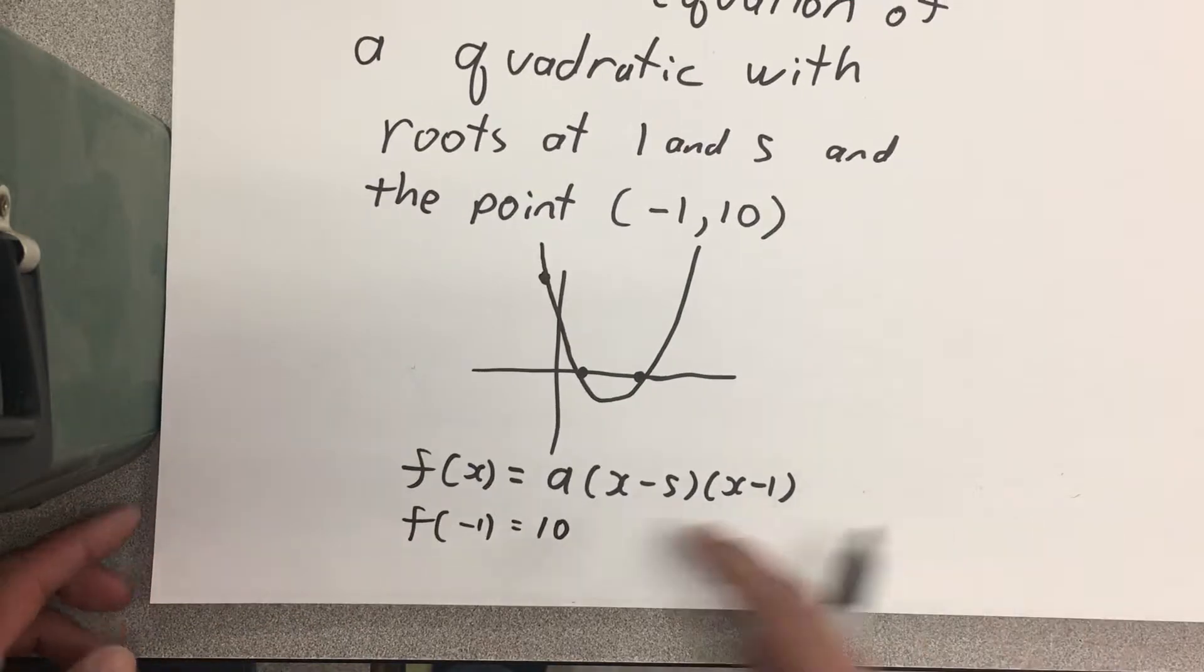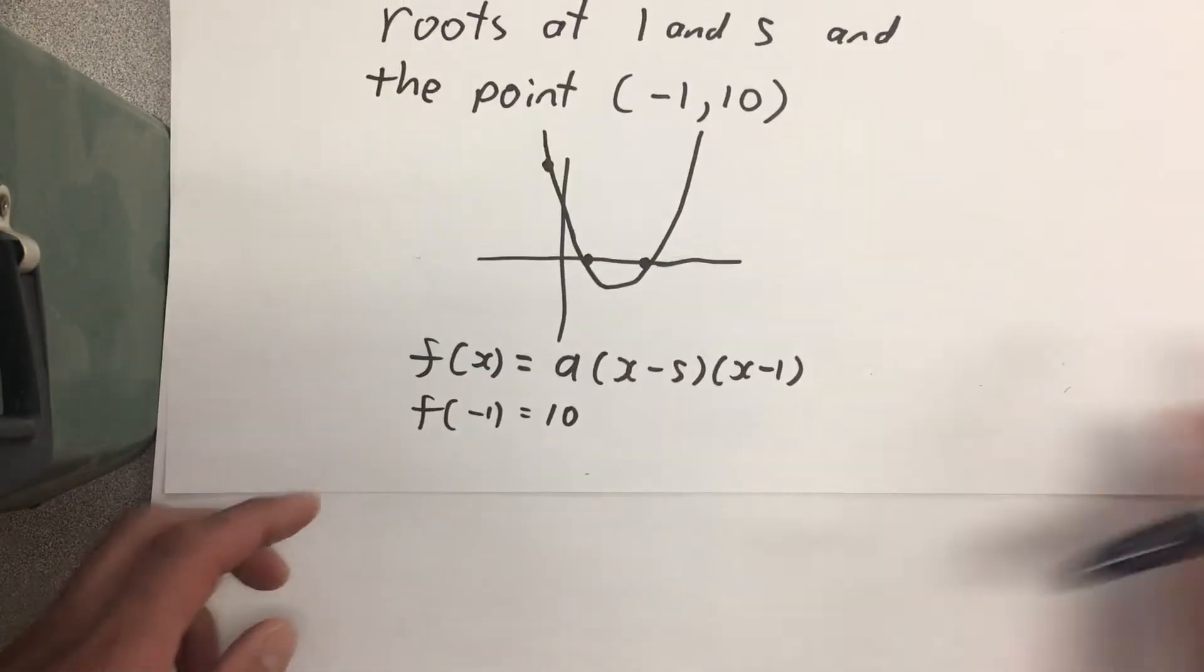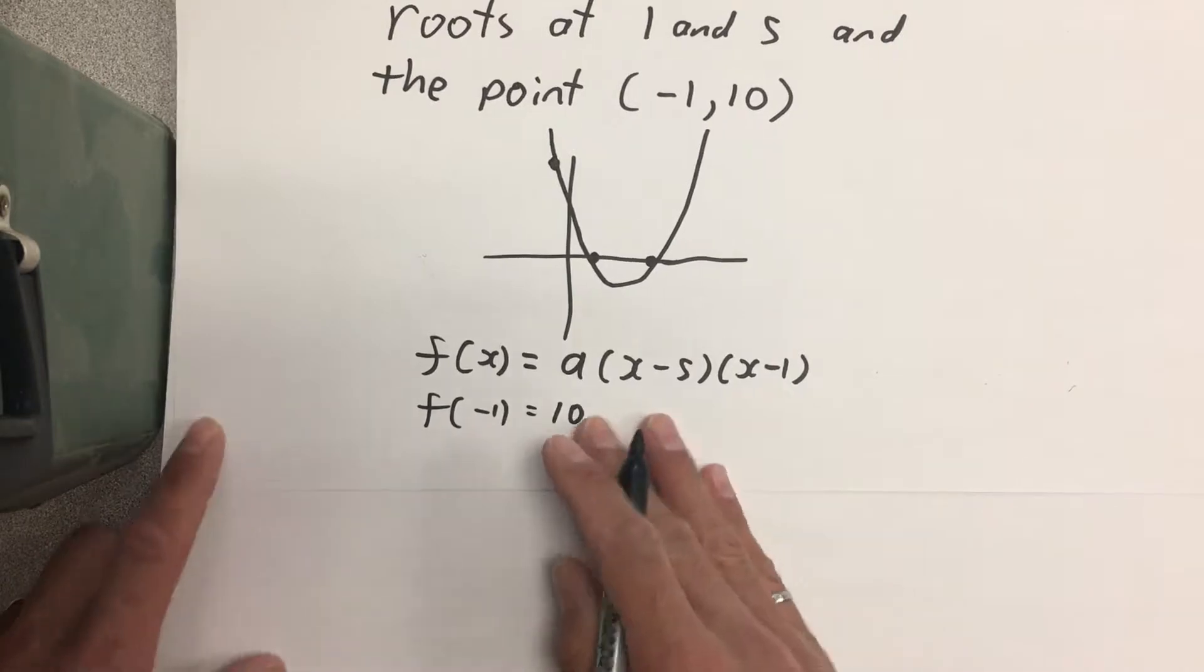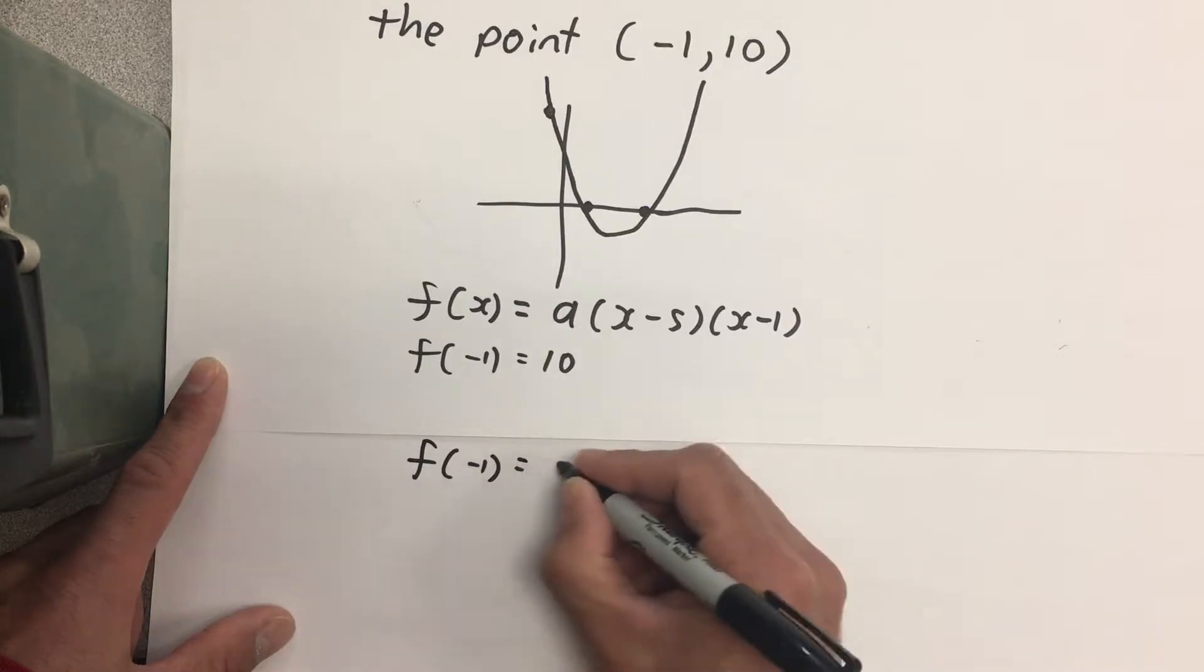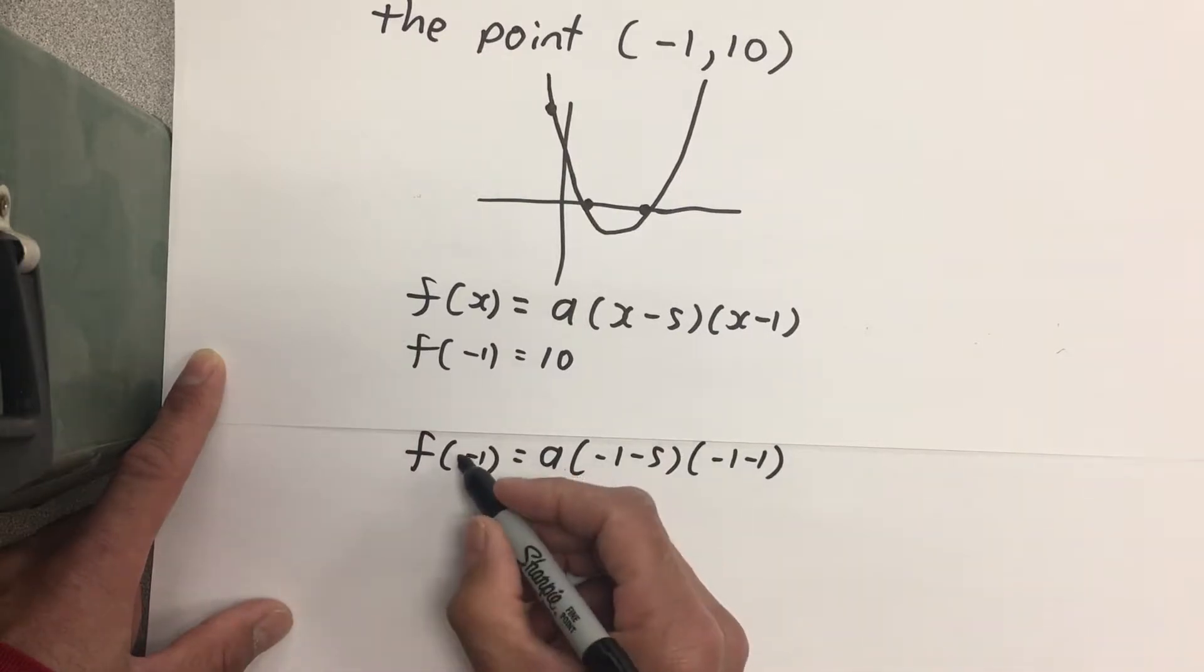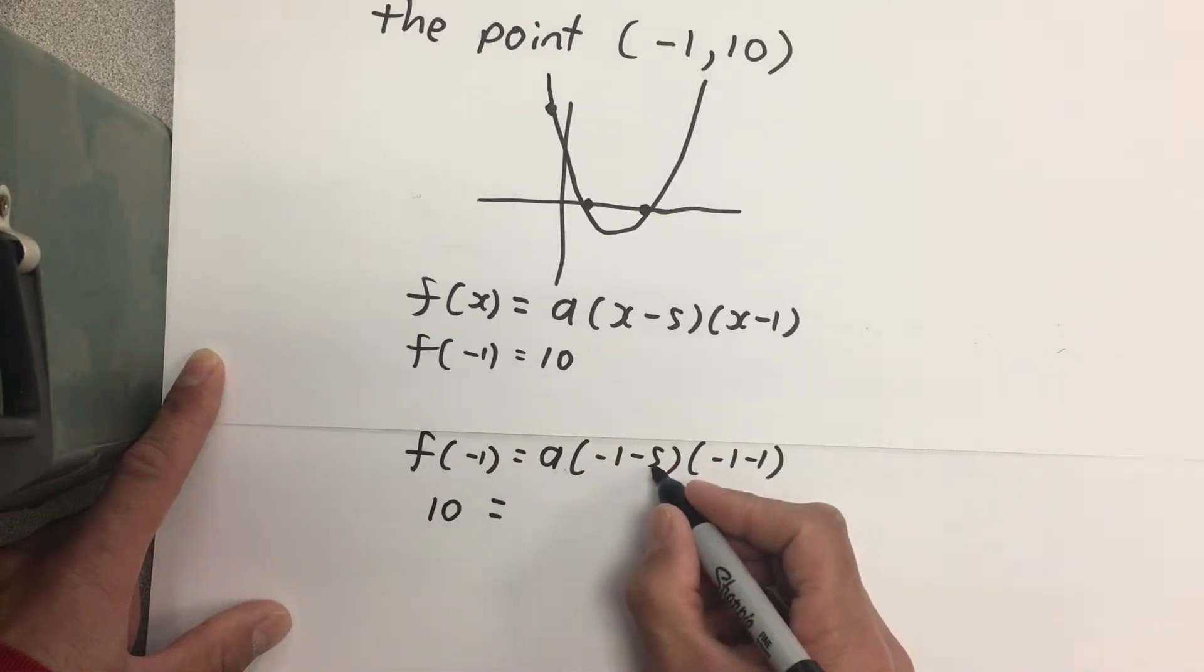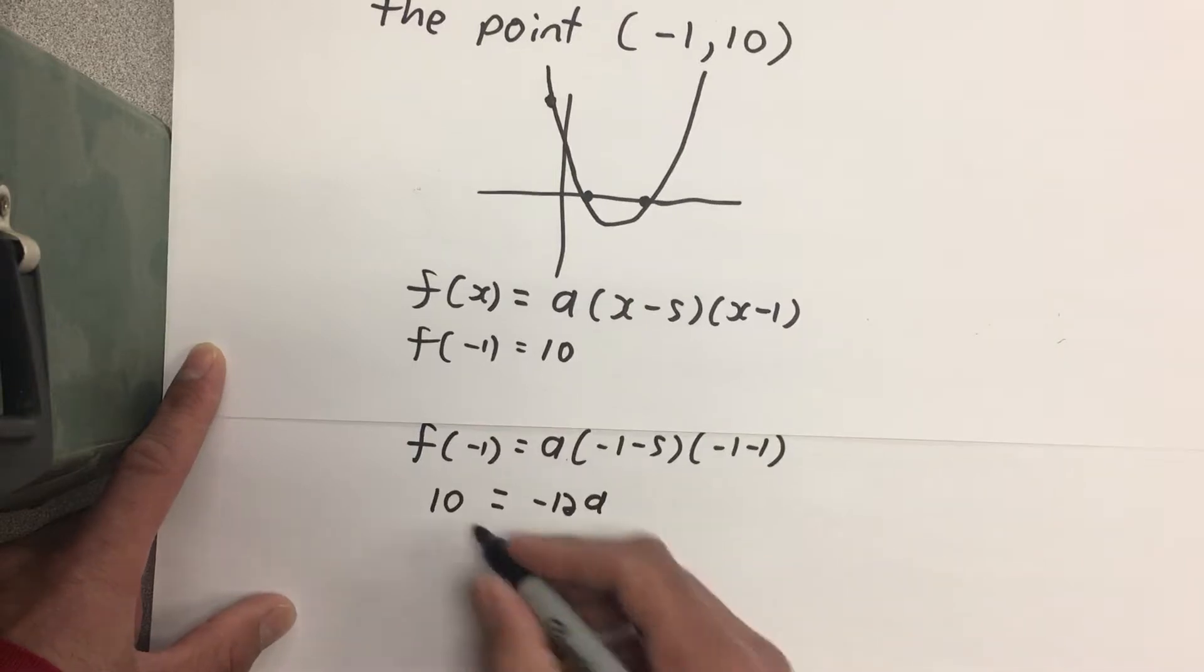Now all we need to do is put these two equations together. If f(x) equals some number times (x - 5) times (x - 1), then that means that f(-1) is a times (-1 - 5) times (-1 - 1). f(-1) is 10. And this is -6 times -2 is -12, and all that's multiplied by a. So a is -10 over 12.